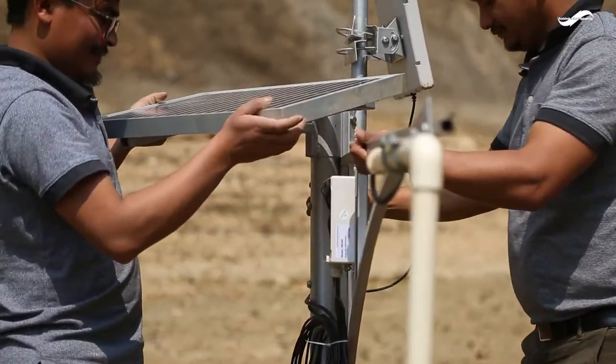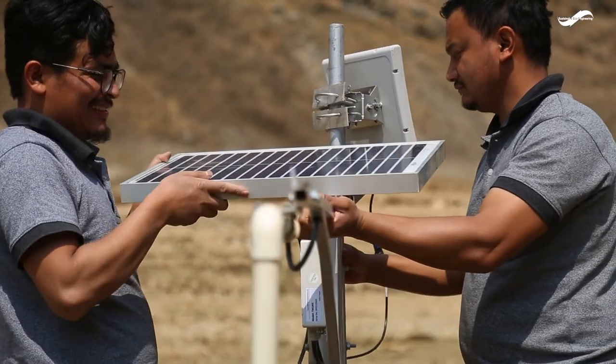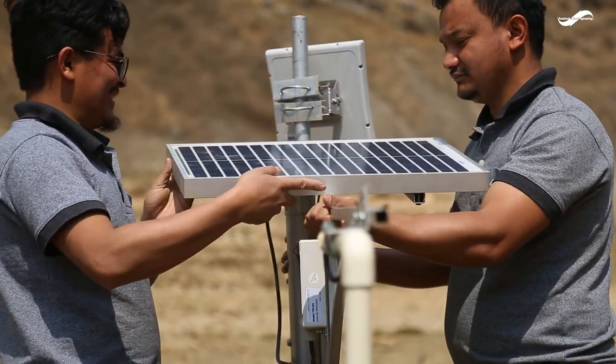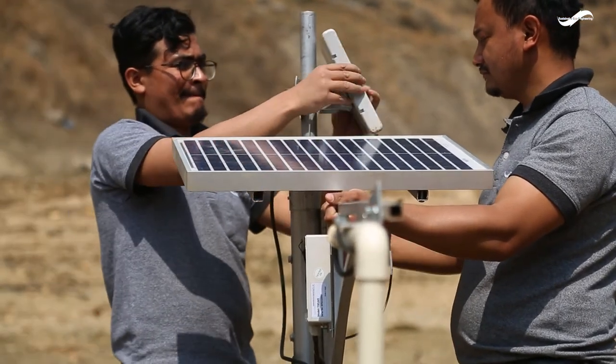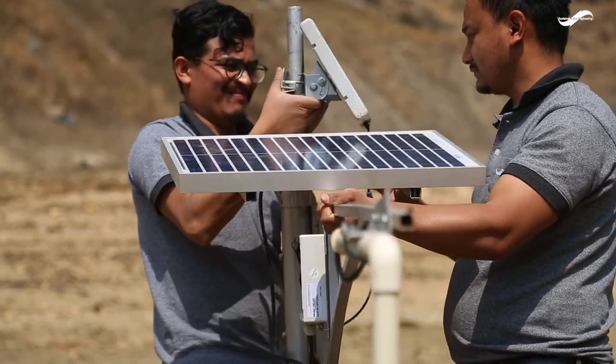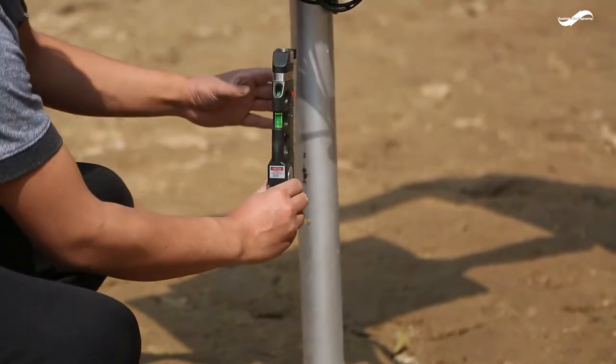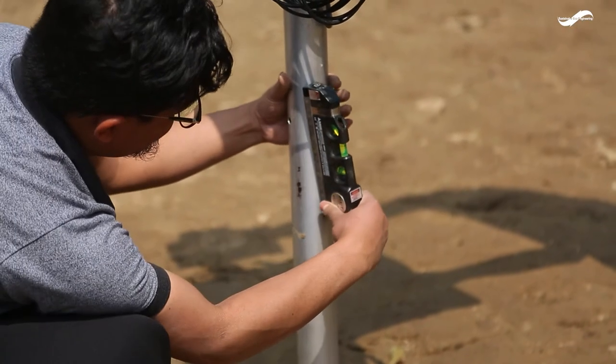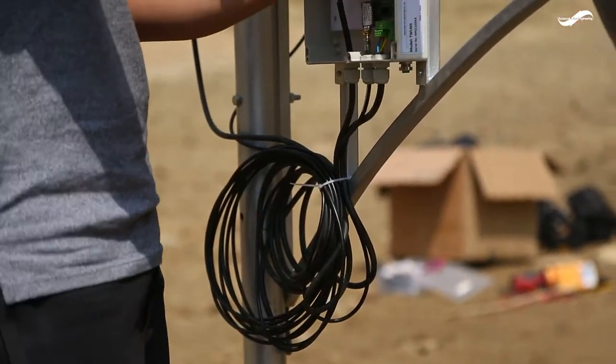Align the solar panel facing to the direction of maximum solar radiation time. Then after, align the antenna such that it is facing towards the receiver antenna. Align the sensor to be perpendicular to the riverbed using adjustable brackets and calibrating with the spirit level.